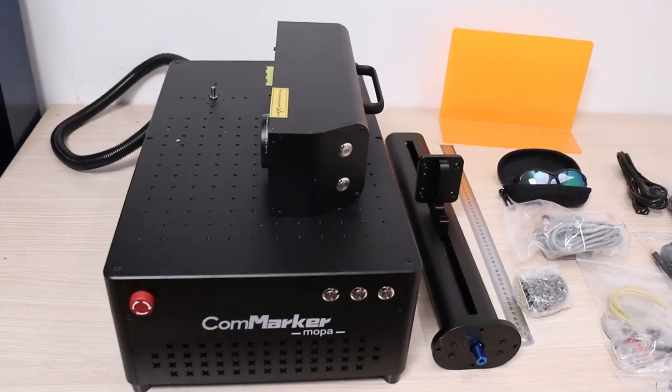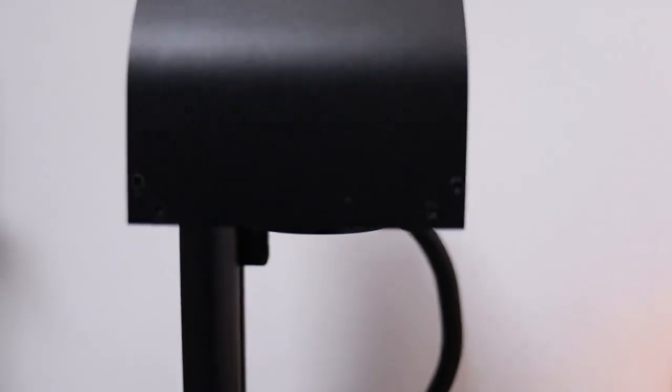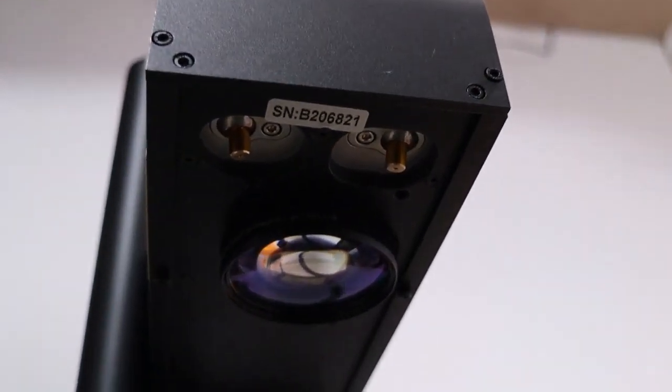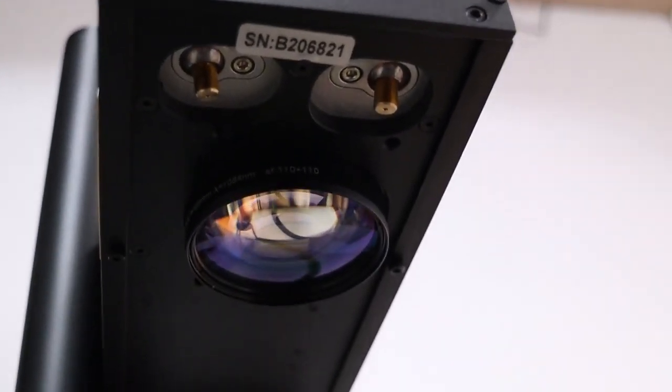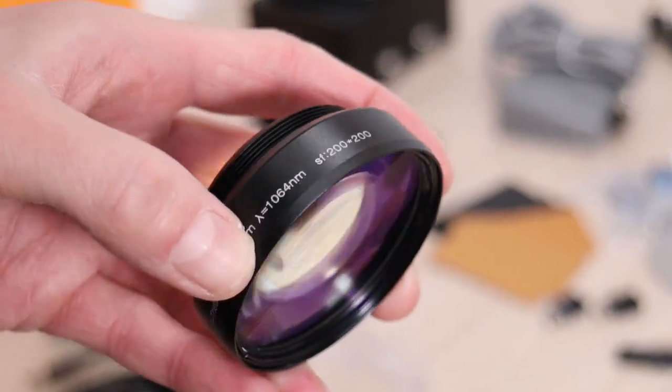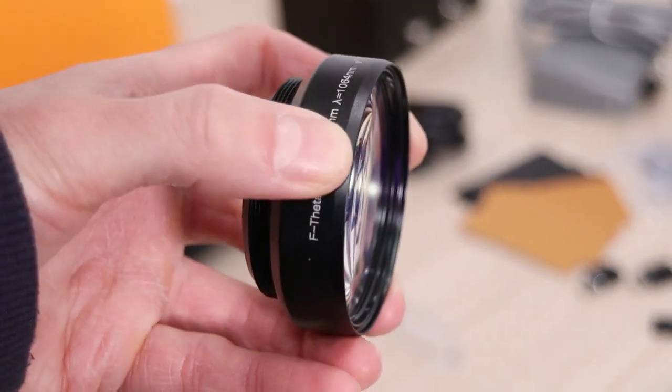The machine is very quick to assemble, as you just need to attach the Z-axis column. It comes with two lenses, a 110mm and a 200mm lens. The smaller lens is great for producing deep and detailed engravings in metal, and the larger lens is great for larger engravings on metal and plastics and producing colored engravings on stainless steel.